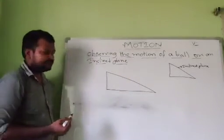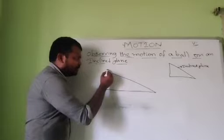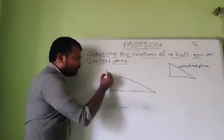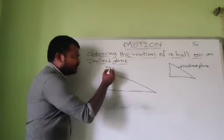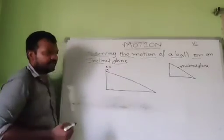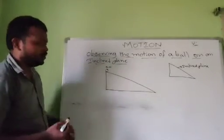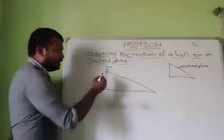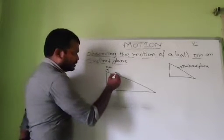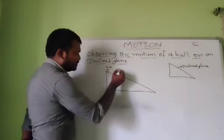In this inclined plane, suppose if you take a ball on top of this position and take it as t equal to 0 seconds — at the time of 0 seconds, you are taking the ball at the top of this inclined plane and leaving the ball — it reaches to a certain point. At this point, maybe the time t is equal to 1 second.